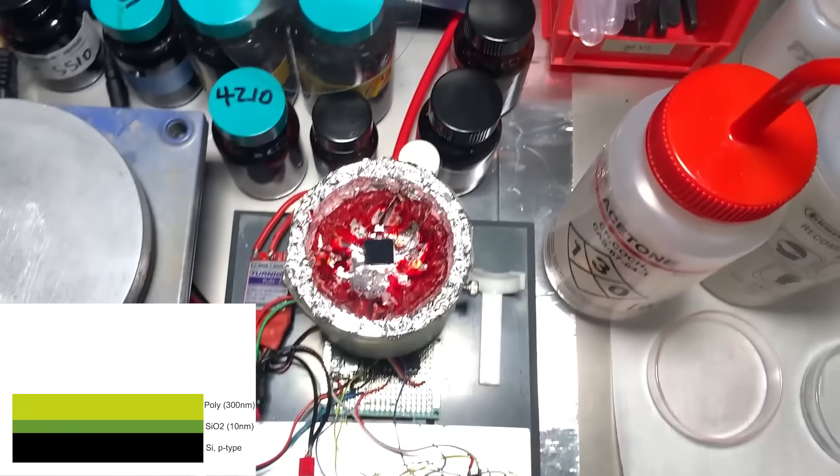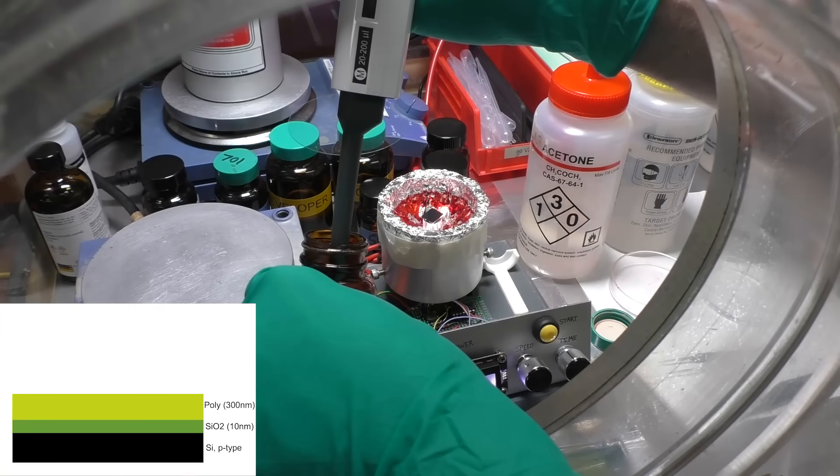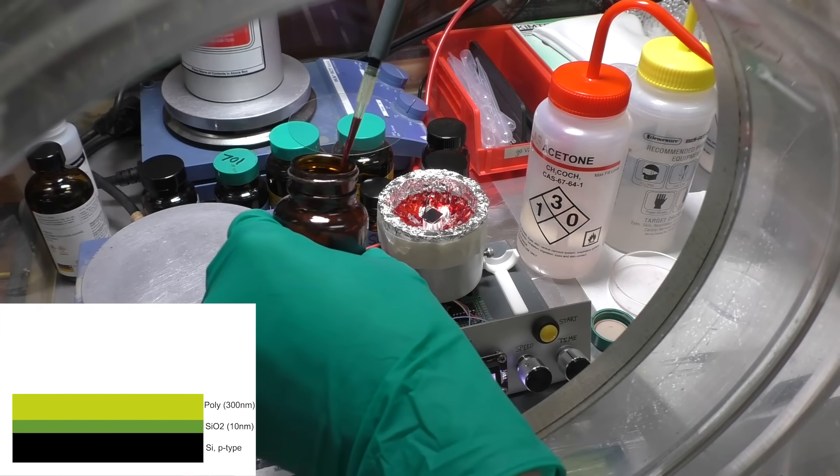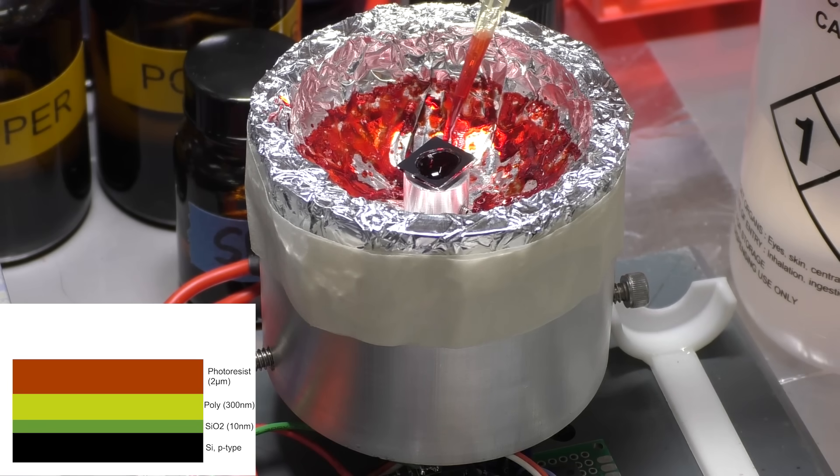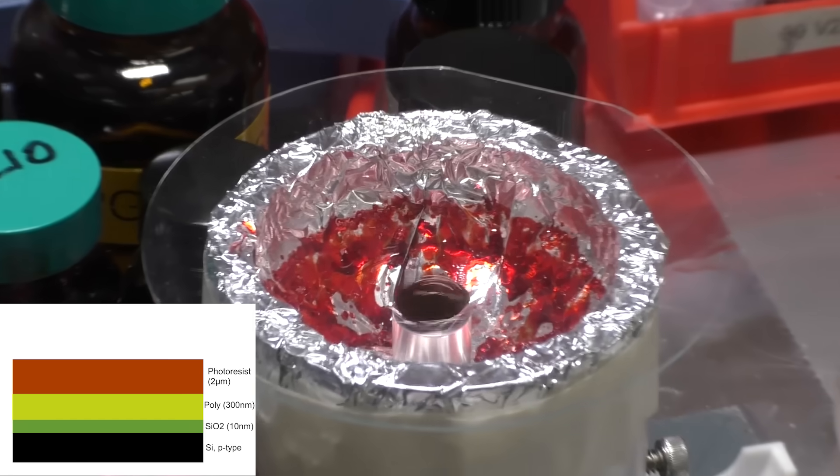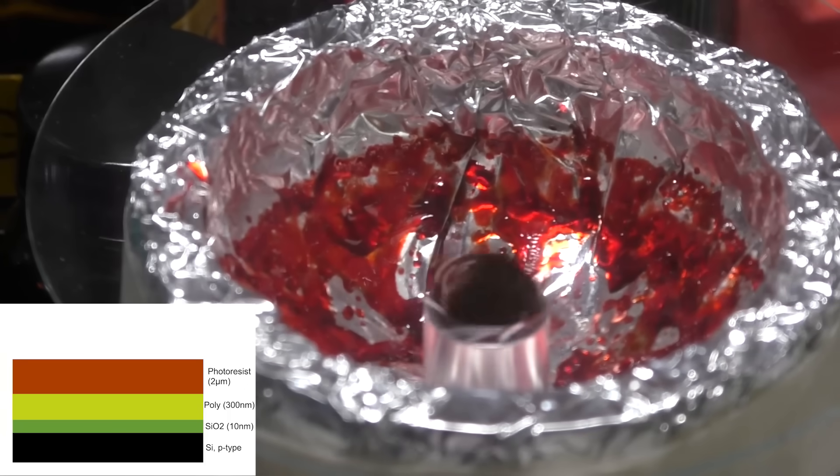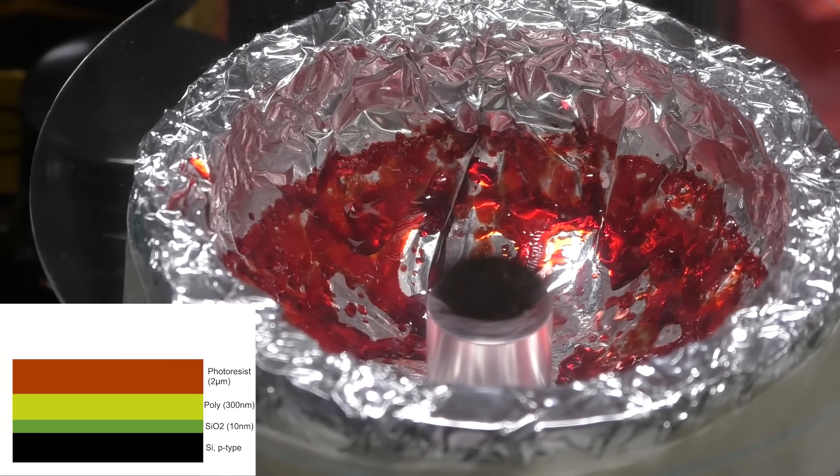The first layer to define is the doped layer that makes the source and drains of the MOSFETs. I put it on this homemade spin coater, and then I deposit photoresist on top of it. You only need about 100 microliters or so to cover a small wafer like this, and we spin it at 4,000 RPM for 30 seconds.